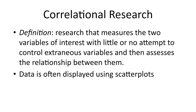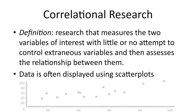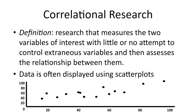You know you're doing correlational research if the data is displayed like this. This is a classic scatter plot where you have a single data point for each participant in your study, and that single data point tells you what score that participant got on both of your variables.